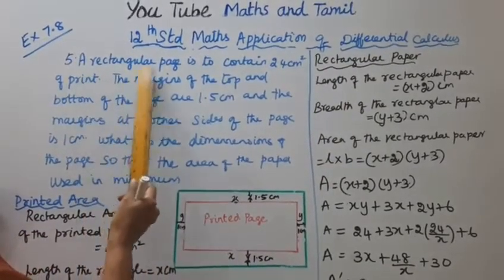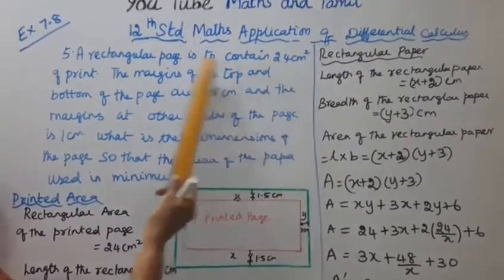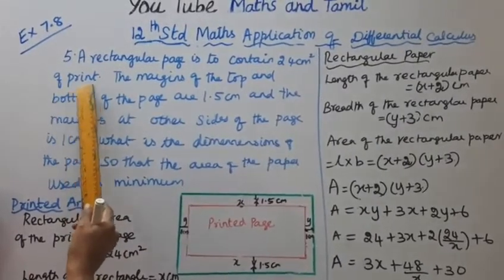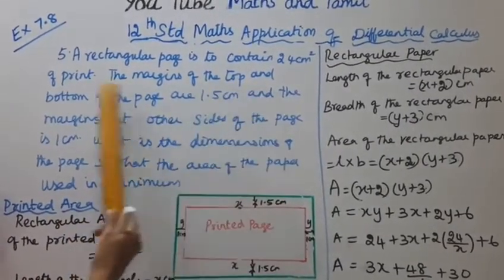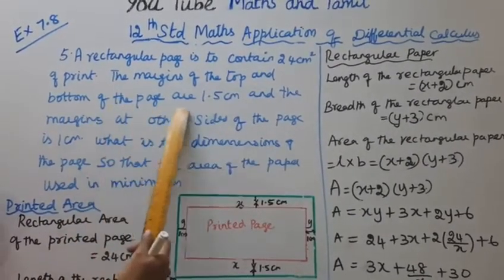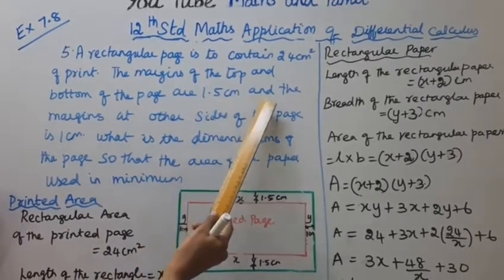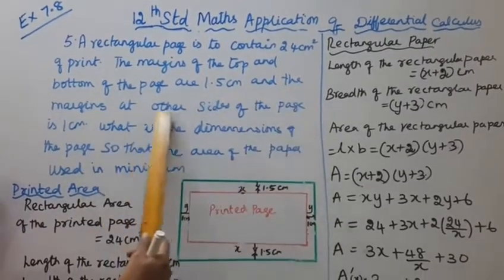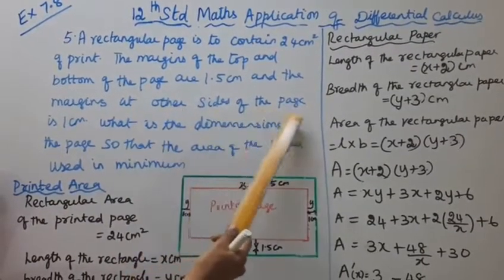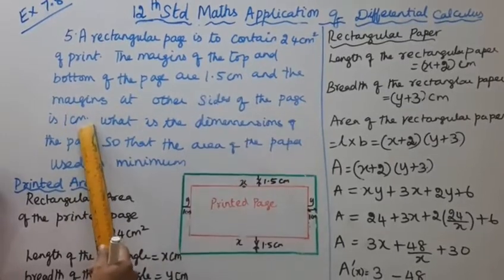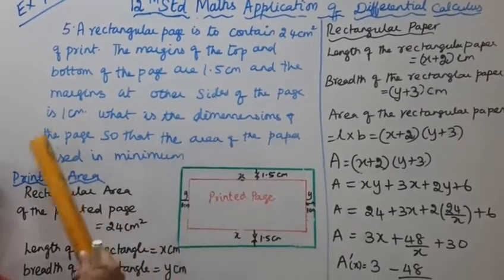A rectangular page is to contain 24 cm² of print. The margins at the top and bottom of the page are 1.5 cm, and the margins at the other sides of the page are 1 cm. What is the dimension of the page so that the area of the paper used is minimum?